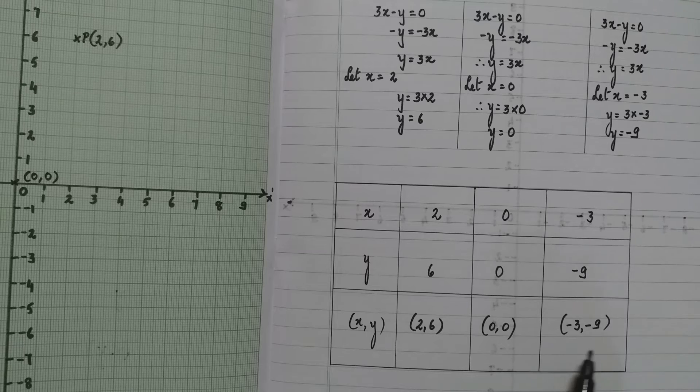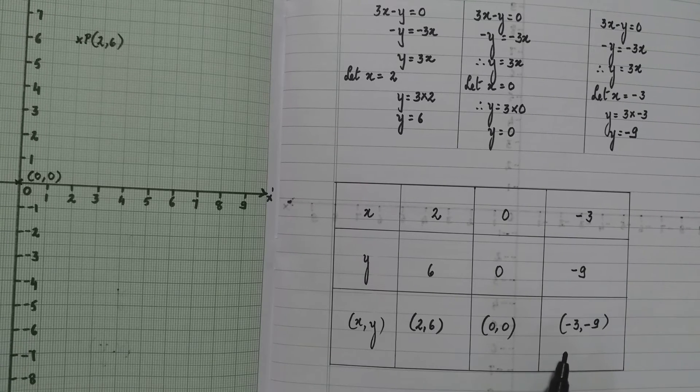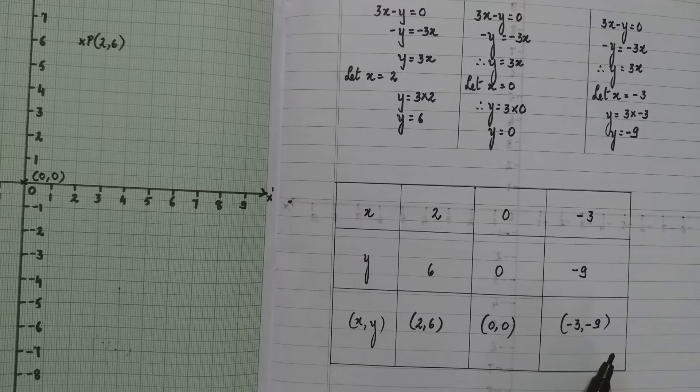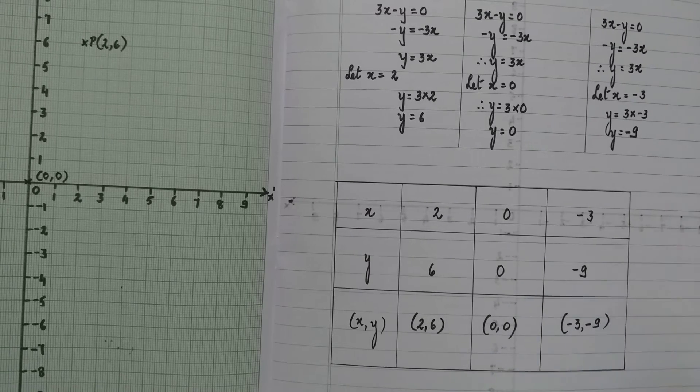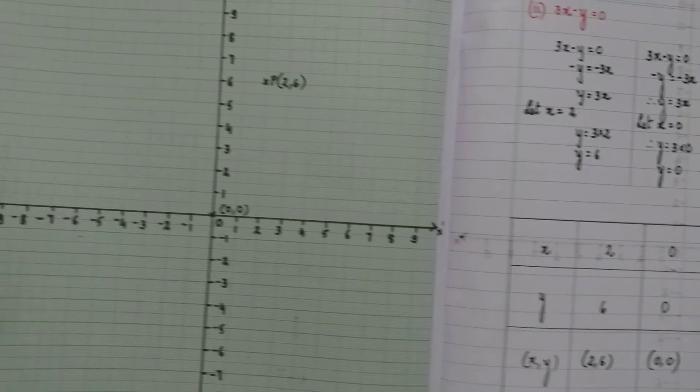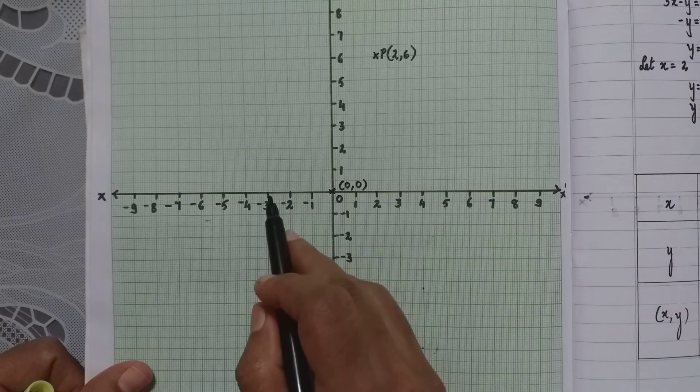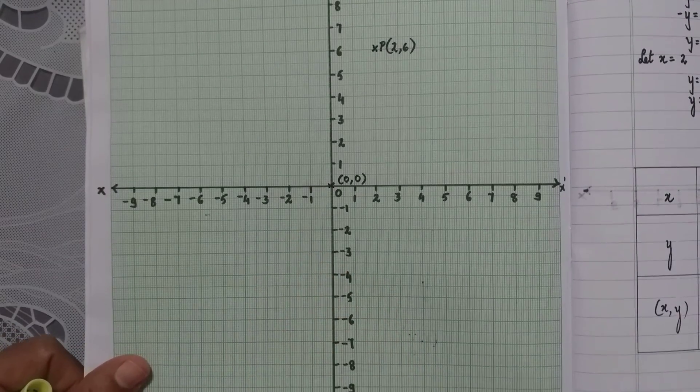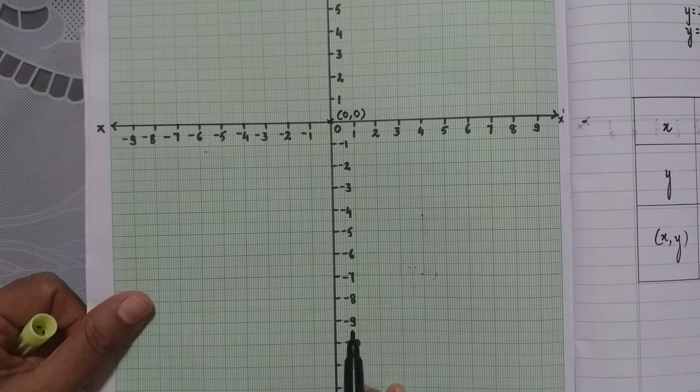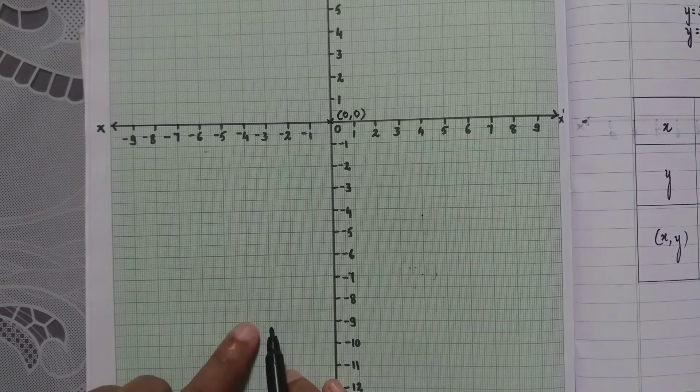What about the third pair of coordinates? Minus 3, minus 9. When both are negative, it means it lies in the third quadrant. So the third quadrant is here. Minus 3 on the x-axis and minus 9 on the y-axis.